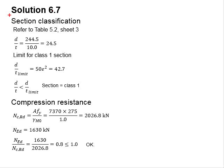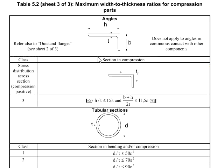Next, you determine the section classification. As the member is circular hollow section, we are referring to Table 5.2 sheet 3.